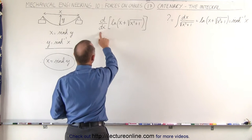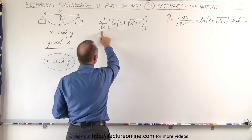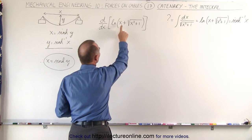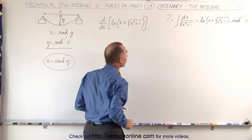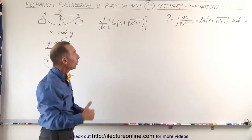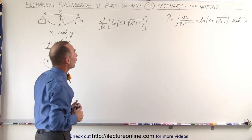So here we have d/dx, the derivative with respect to x, of the natural log of the quantity x plus the square root of x squared plus 1, and of course the square root is that x squared plus 1 raised to the 1/2 power.